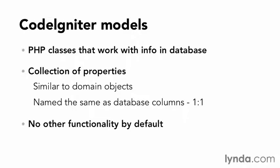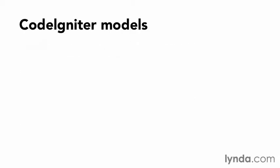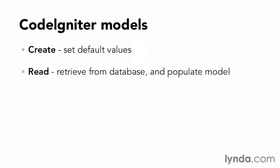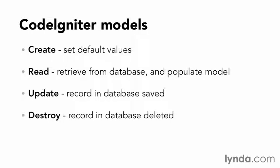Traditionally, the model is a class where common functionality can be defined, including Create, where something like a timestamp or other default values can be set; Read, where a record is retrieved from the database and used to populate the model; Update, where a record in the database is saved; and Destroy, where the record in the database is deleted. Create, Read, Update, Destroy is a common collection of functionality referred to by the acronym CRUD.